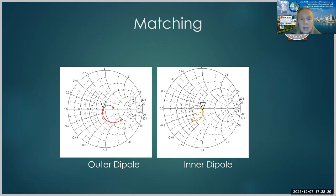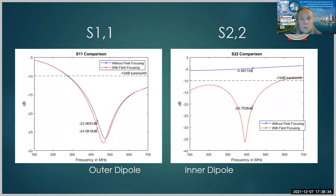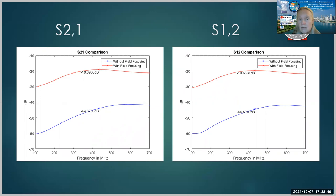So let's take a kind of a summary comparison of our dipole case with and without the field focusing. So you can see that the S11 is very similar for the outer dipole, makes very little difference, but it substantially helps to match the inner dipole. As a result, the S21 and the S12 are much better for the dipole that has the field focusing rods.